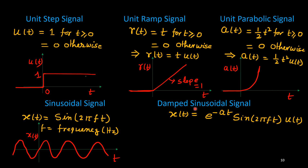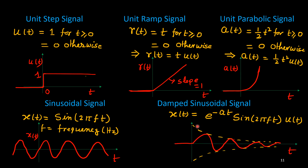Next we discuss the damped sinusoidal signal, where the sinusoid's amplitude reduces over time — specifically in the exponential form e^(−at). This e^(−at) is called the envelope of the signal: when the sine component is +1, the signal touches this envelope, and when it is −1, it touches the negative envelope −e^(−at). These signals are discussed in detail in my lecture, whose link is provided above.